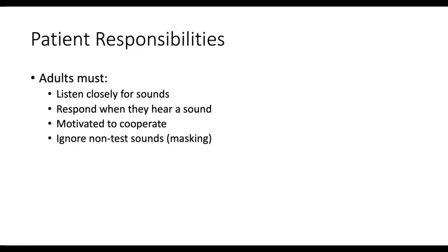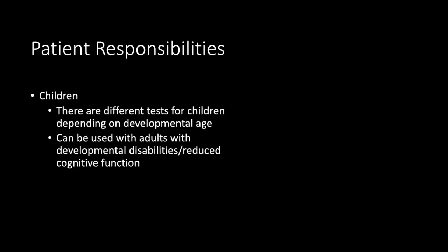For adults, they must listen closely, respond when they hear, be motivated to cooperate, and ignore non-test sounds. Regarding masking: if we're presenting speech in the right ear at 100 dB, there's only so much interaural attenuation that occurs — the head acts as a natural reducer of sound from one ear to the other. That's called interaural attenuation. There are times we have to put speech noise in the opposite ear.